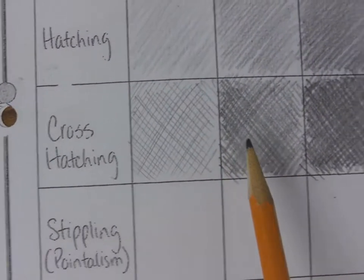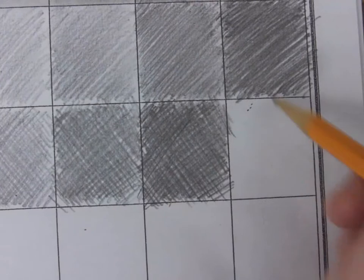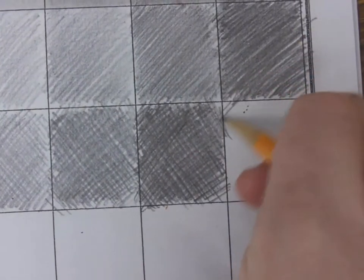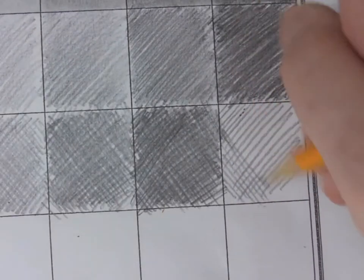Okay, and so we've got right and this one's going to have to be really dark so I might have to go over it five or more times with cross hatching. So one direction and then the opposite.